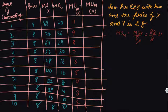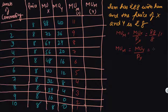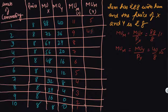In order to calculate the MU_M of Y, we calculate MU_y divided by P_y. For the first unit, MU_y is 40 divided by 8, giving 5. In this way we calculate the marginal utility of money for commodity Y: 5, 4.5, 3, 2.5, 2, 1.5, 1, 0, and then nothing.